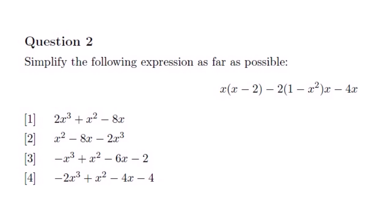Starting with the first bracket, we are going to multiply x multiplied by x — we get x squared. Then x multiplied by negative 2 is negative 2x. So we are multiplying a term with a binomial. Then we are done with this and we go to the next one.